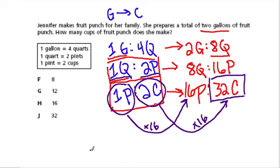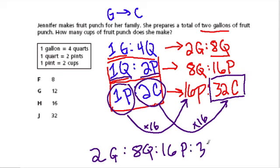And you can write this as one large ratio. Two gallons gives us eight quarts. Eight quarts gives us 16 pints, and 16 pints gives us 32 cups. These are all equal to each other. So here the answer, we're looking for cups. The answer is J, 32. All right, hope that helps.